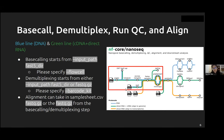After demultiplexing FAST5 files, we implemented PICO QC and NanoPlot for quality checking. For demultiplexed FASTQ, we have FASTQC and NanoPlot for quality checking. Alignment can take in FASTQ files from upstream processes or from user input where the FASTQ file is already demultiplexed.